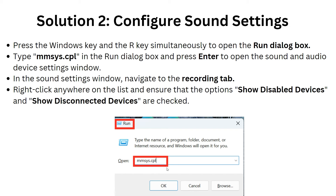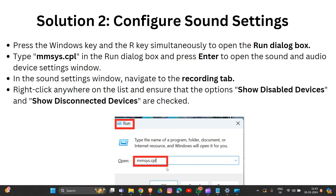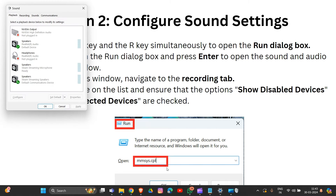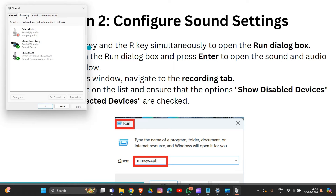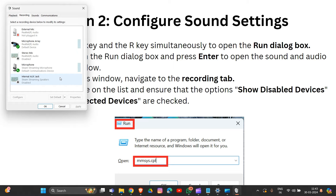If that didn't resolve the problem, move on to solution two: adjusting sound settings. Press Windows + R, then type mmsys.cpl and hit Enter. Go to the Recording tab, then right-click to show disabled devices.